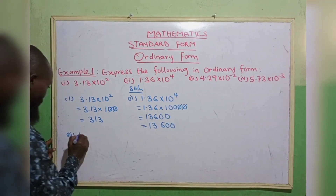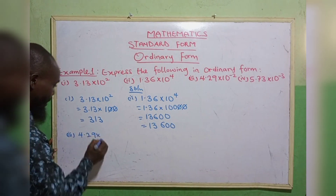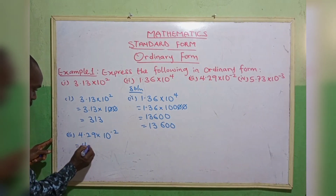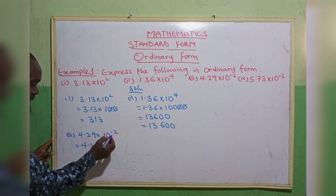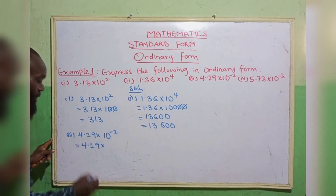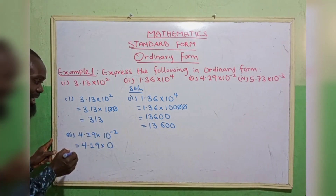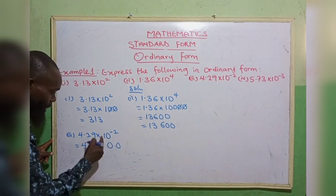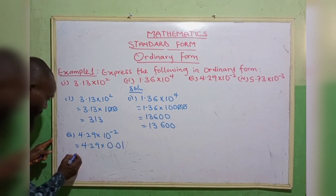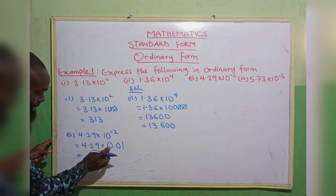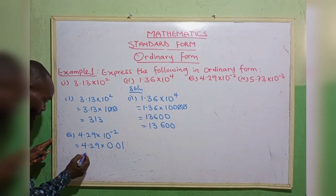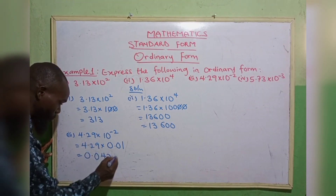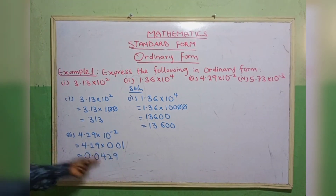The third one: 4.29 multiplied by 10 raised to the power of minus 2. Don't forget — a negative power means we are dealing with decimal points. So we write 0 point first, then since the power is minus 2, we place 2 zeros after the decimal: 0.00, then bring forward the digits 4, 2, 9. So the ordinary form is 0.0429.